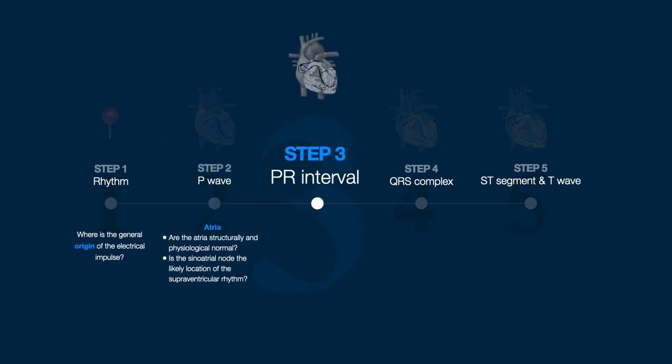Step 3: Assess the PR interval and segment. The PR interval represents the movement of the electrical activity between the atria and ventricles. If the interval is short, this suggests that there is an accessory pathway, meaning that the electrical activity from the atria reaches the ventricles via an alternative pathway. If the PR interval is prolonged, this suggests a block, meaning there is an obstruction impeding normal conduction between the atria and ventricles — known as a heart block.